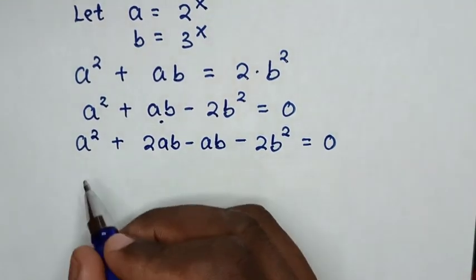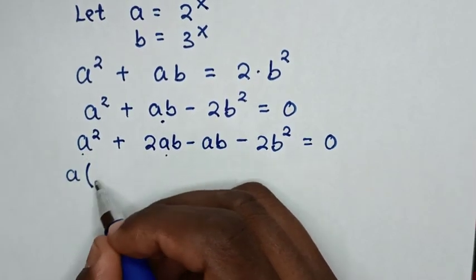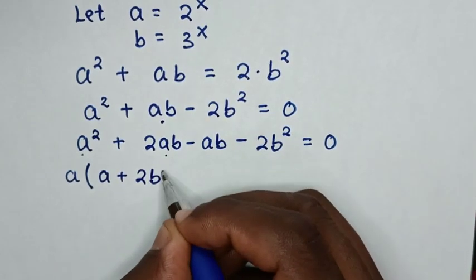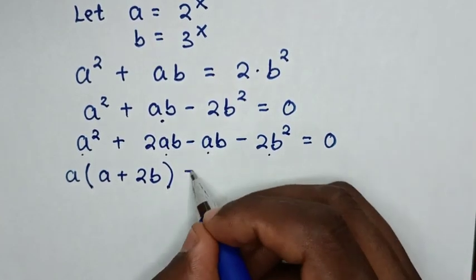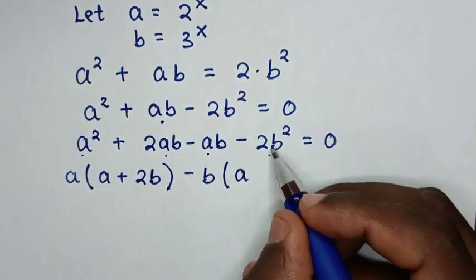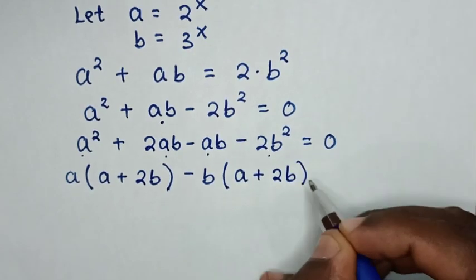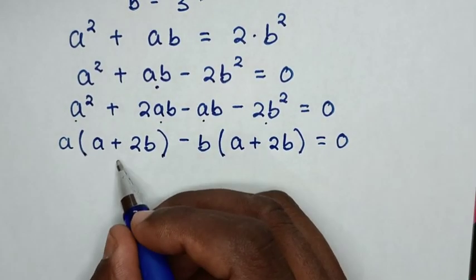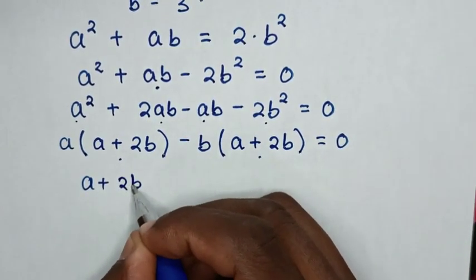In the next step, a is common in the first two terms, so we factor out a to get a(a plus 2b). Then negative b is common in the last two terms, giving negative b(a plus 2b). So a plus 2b is common and we factor it out.